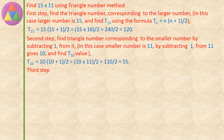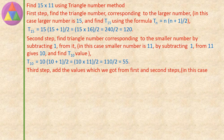Third step: add the values obtained from the first and second steps. In this case T15 plus T10, which equals 120 plus 55, equals 175.